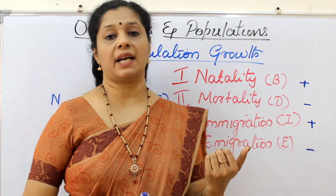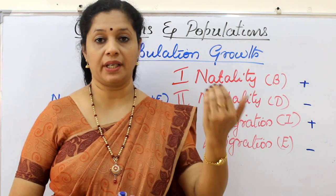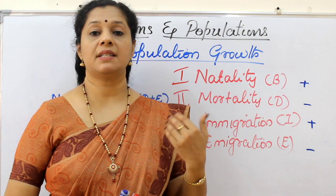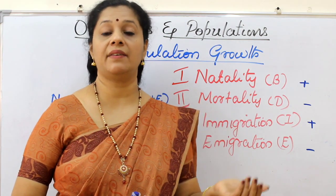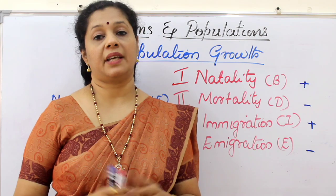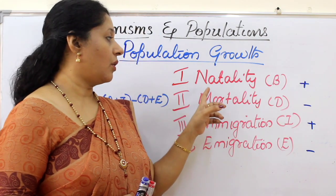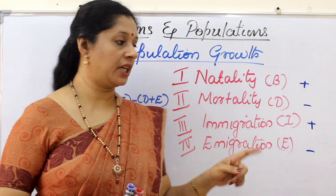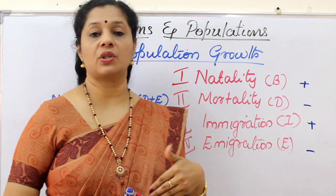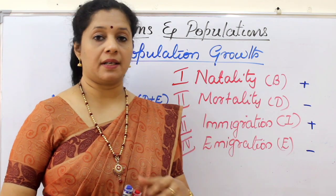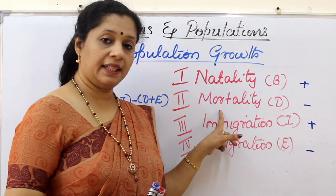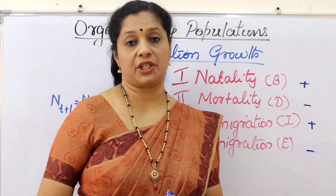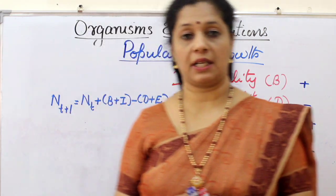Immigration means the organisms which are coming or joining the population from another habitat, whereas emigration means the organisms which are leaving the population during the time we are considering. Birth rate and immigration are adding to or increasing the population, whereas mortality or death rate and emigration are actually decreasing the size of the population.